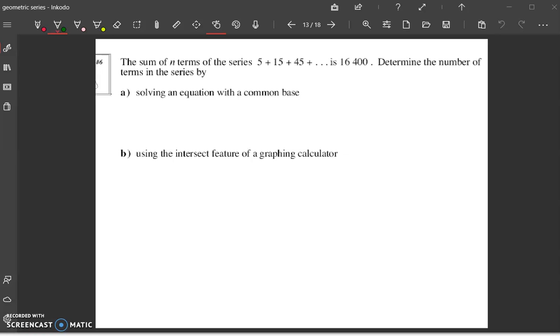Example number six on page 65. We are given here the sum of n number of series, the series to be 16,400. They've given us Sn and what they want us to find here is the number of terms.